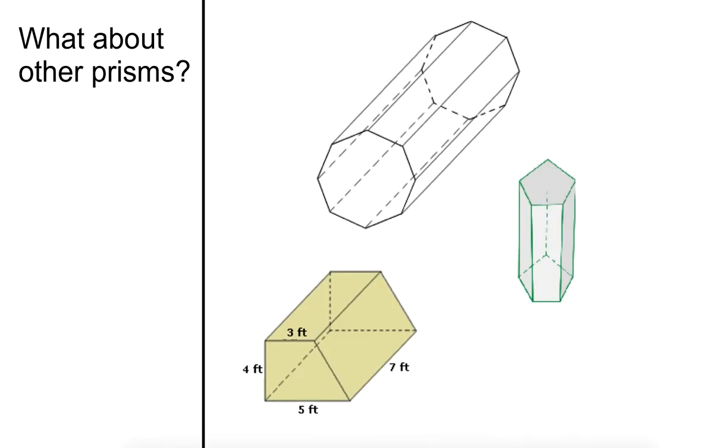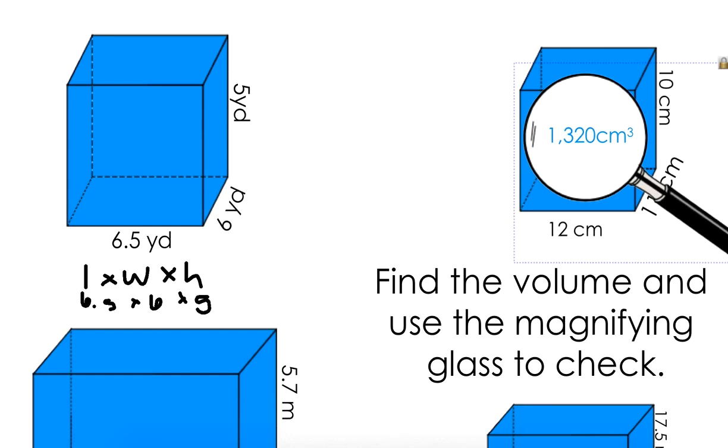So if we go back here for a second, and let's look at one of these. Here's the base, which is 6.5 times 5. If we find the area of that, and then we're going to fill this up, it's times 5. So it's the same thing as length times width times height.